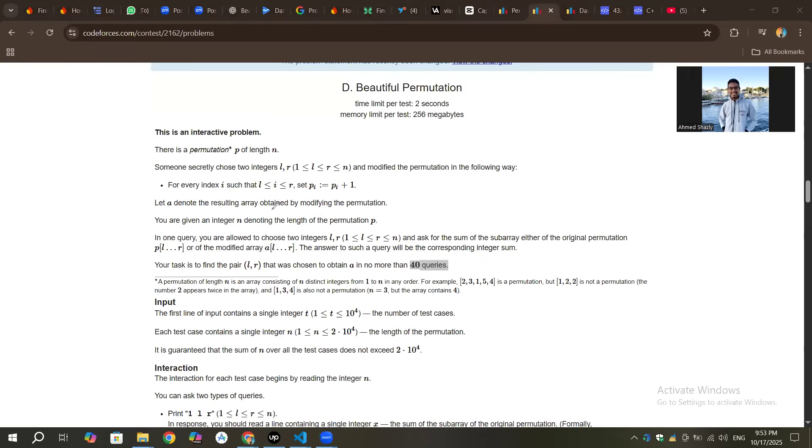a permutation like this permutation for example. And someone would choose L and R, like would choose a specific range, like this range or this range or anything like that.